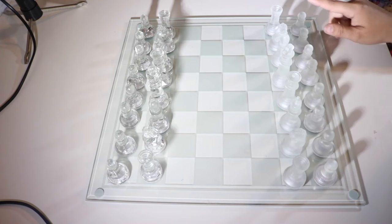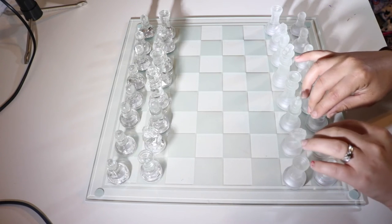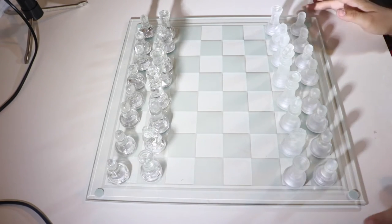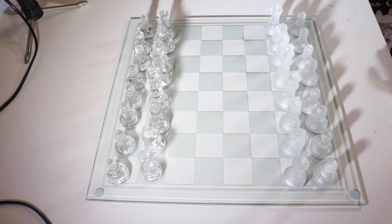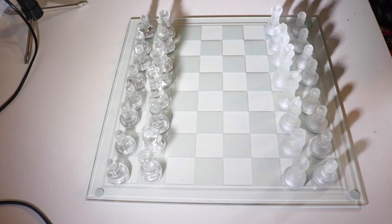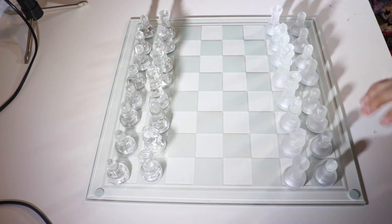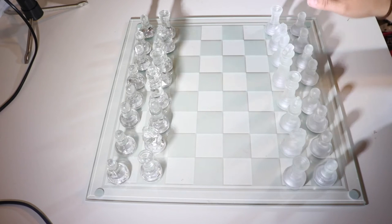And then you have all your pieces here, you get a total of 32 pieces. Yeah, 32 glass chess pieces and the game board, which is 35 centimeters by 35 centimeters. So, there's that for you. And so yeah, this is what the pieces look like.